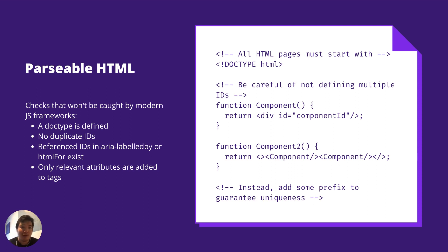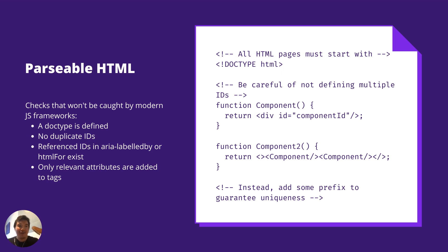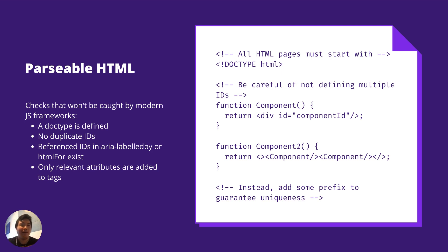There are some checks that won't be caught by modern JS frameworks, either due to limitations or because that's not what the framework is trying to solve. A doctype needs to be defined. JS frameworks usually won't handle this because they're added after the fact, and the doctype needs to be defined before the fact. It's really just declaring this page is an HTML page — a vestige of early web pages, but something we still need to do.